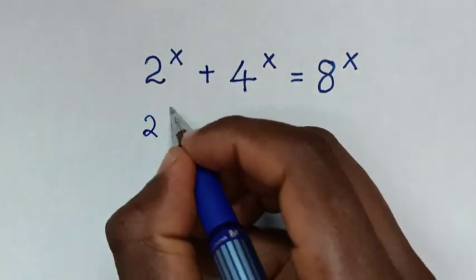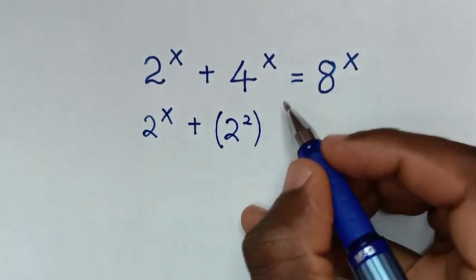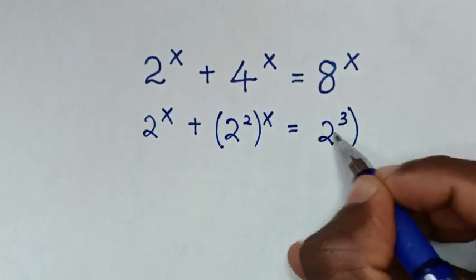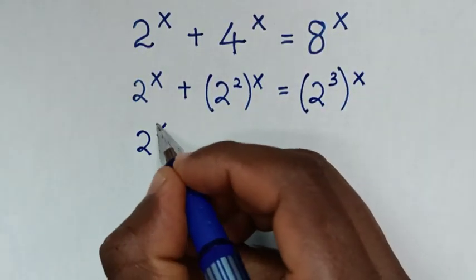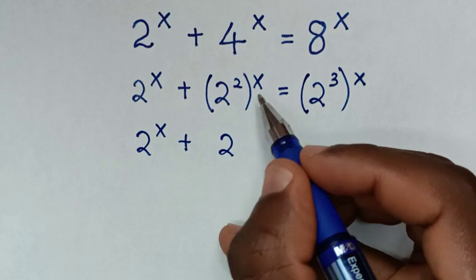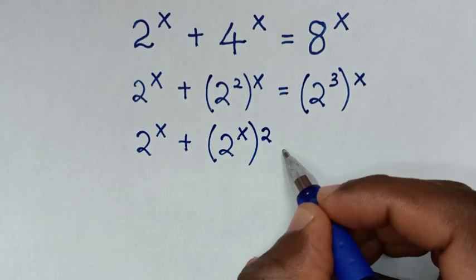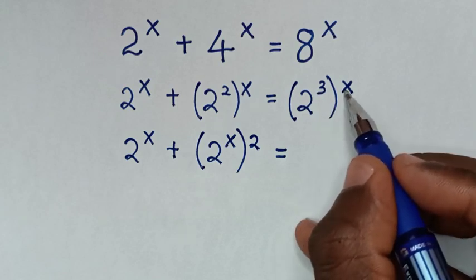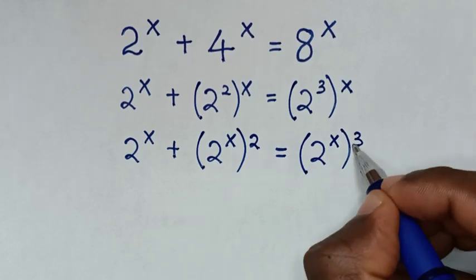We rewrite: 4 is the same as 2 squared, so 4^x becomes (2^2)^x. And 8 is the same as 2 power of 3, so 8^x becomes (2^3)^x. Taking the power of x inside the brackets, we get 2^x plus 2^(2x) is equal to 2^(3x).